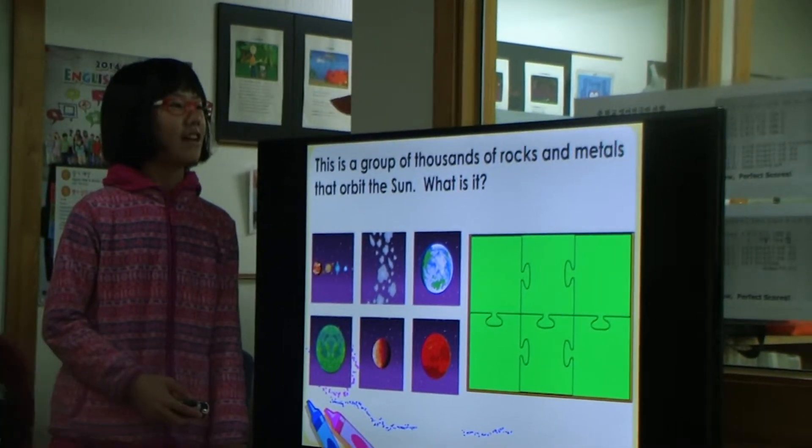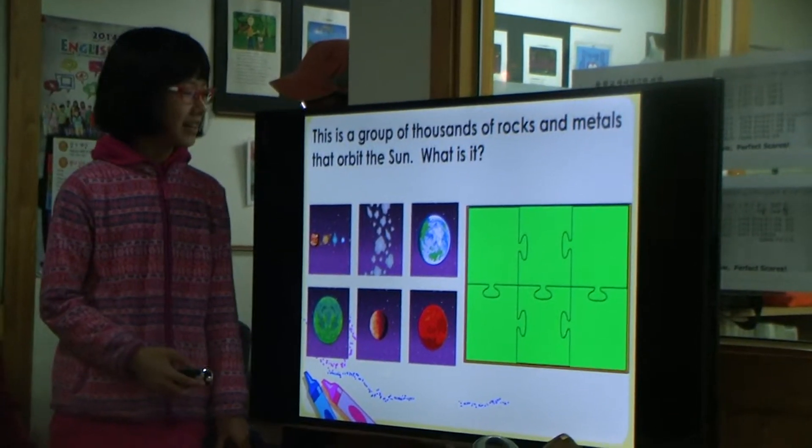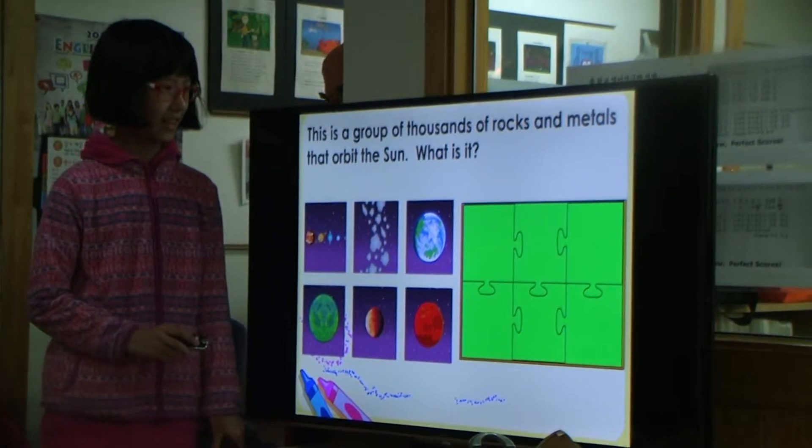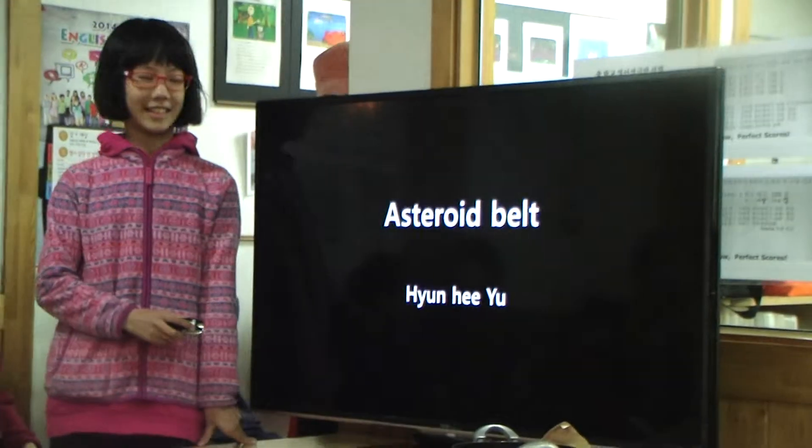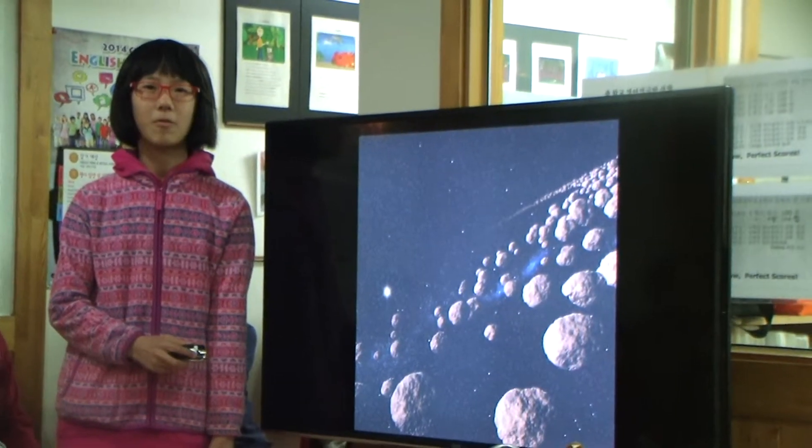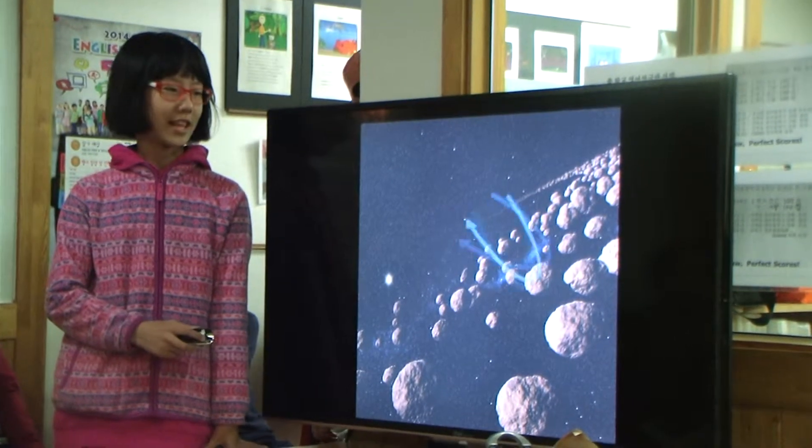This is a group of thousands of rocks and metals that orbit the sun. What is it? Asteroid belt. The asteroid belt is made of thousands of rocks and metals that orbit the sun.